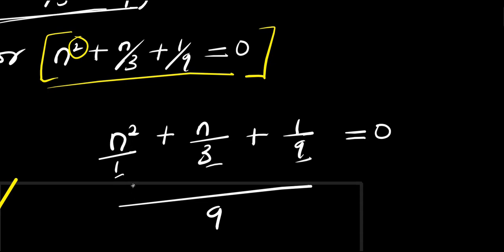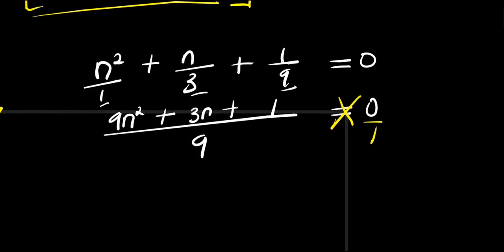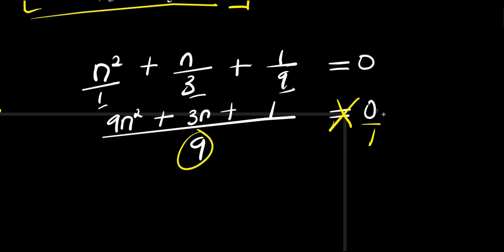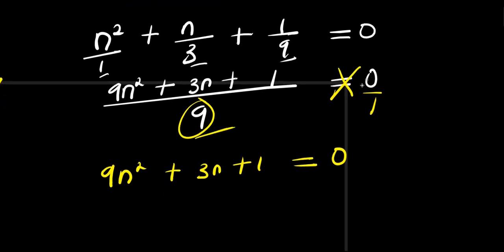Multiplying through by 9: 9 divided by 1 gives 9, times n squared is 9n squared. Plus 9 divided by 3 is 3, times n is 3n. Plus 9 divided by 9 is 1. So we have 9n squared plus 3n plus 1 equals 0.